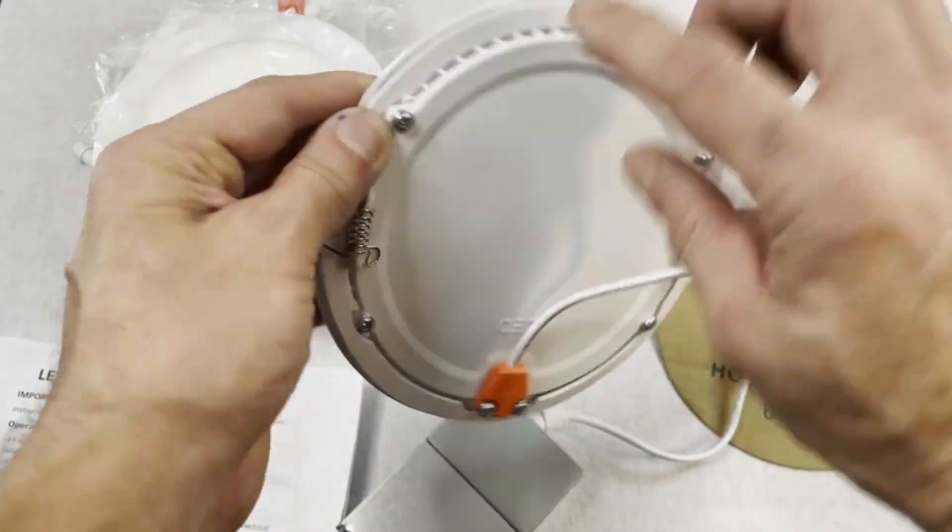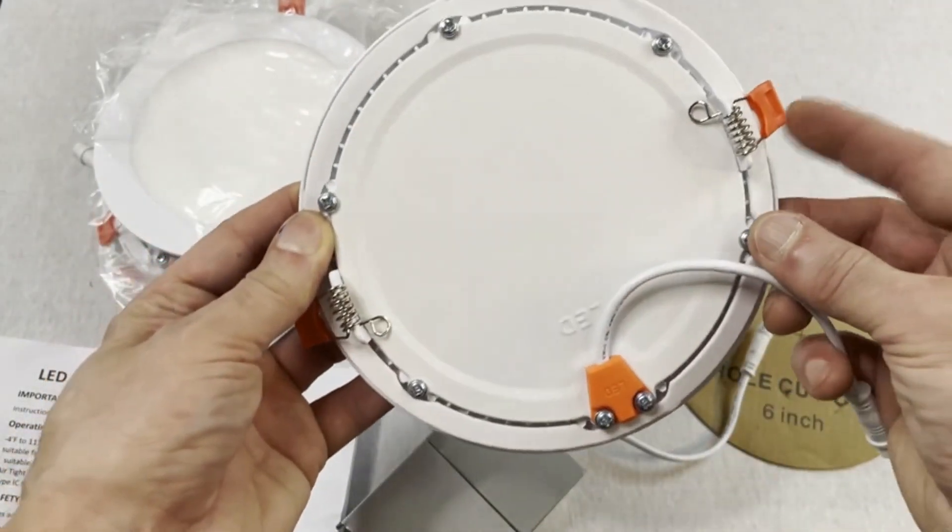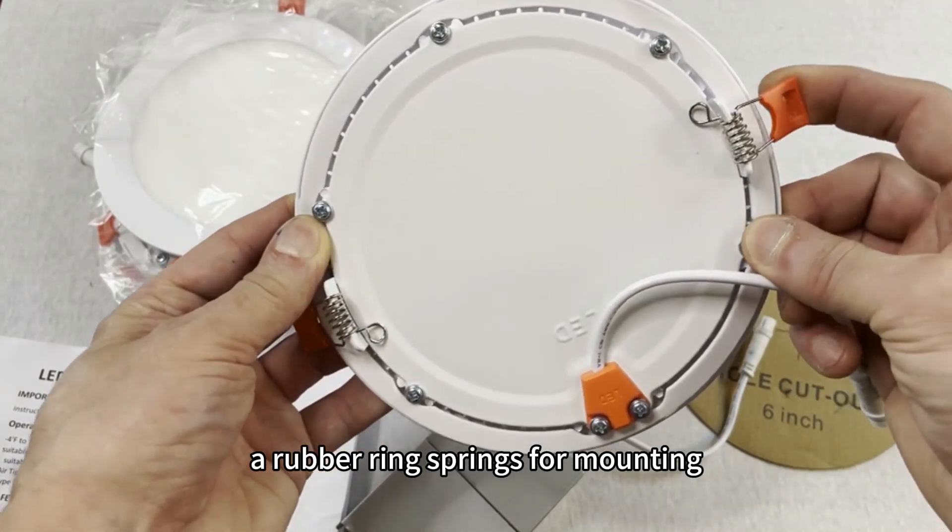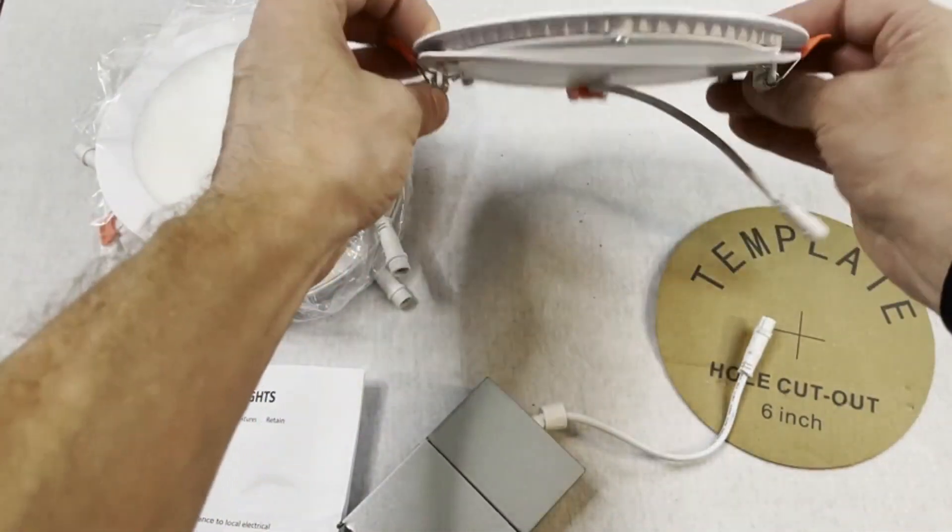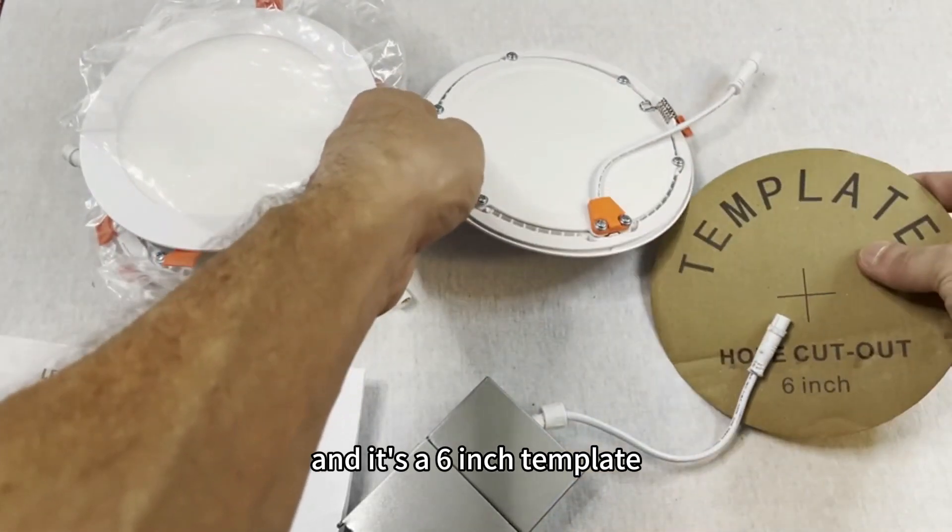The light itself is plastic, with a rubber ring, springs for mounting, and it's a six-inch template.